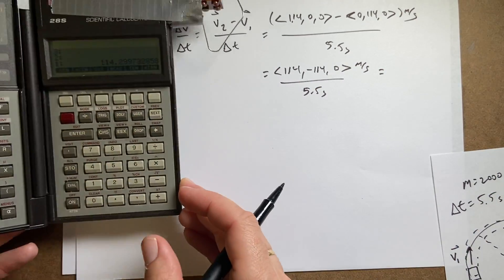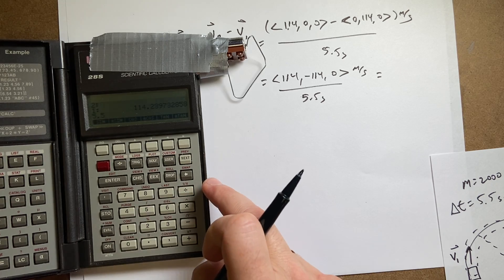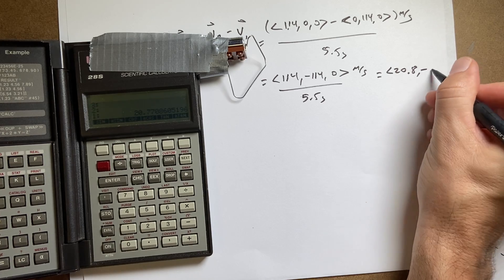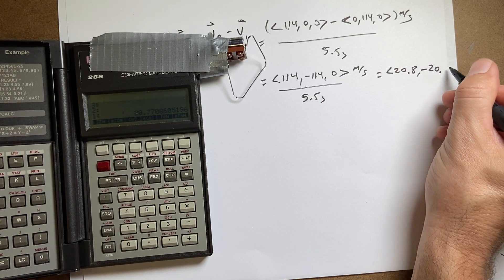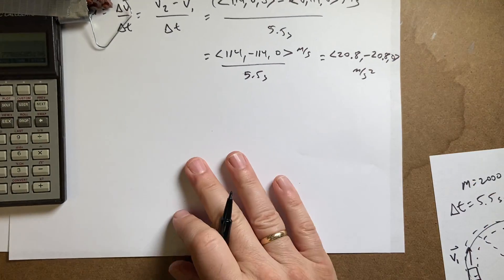So I'm going to put my calculator right here. I already have that. I just say 5.5 divided by. And I get 20.8, negative 20.8, 0 meters per second squared. That's the average acceleration.